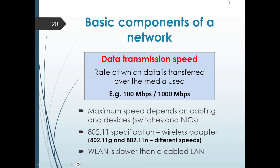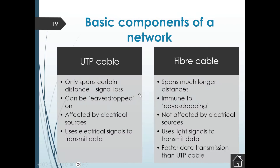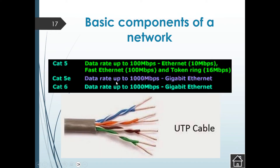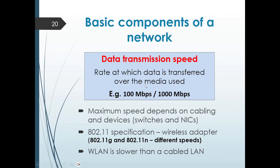Data transmission speed is the rate at which data is transferred over the media used — for example, 100 megabits per second or 1,000 megabits per second. When you see that rating on a cable, it means the maximum speed at which data can be transferred on that particular cable.